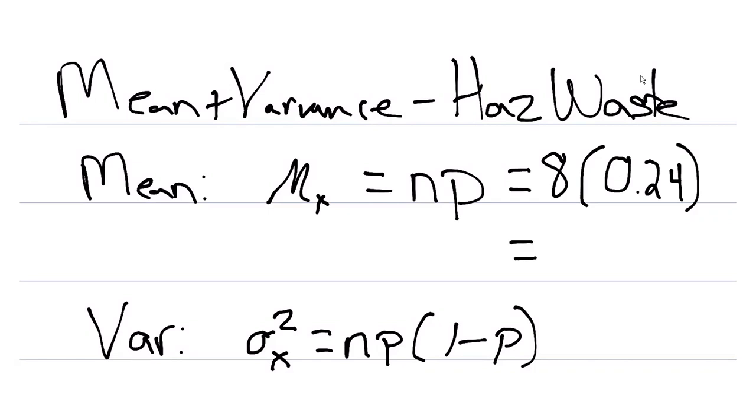And so here, we can find our mean of 1.92. So that would say, on average, we would expect 1.92 facilities to be issued a violation if we sampled eight of them with a proportion of 0.24.